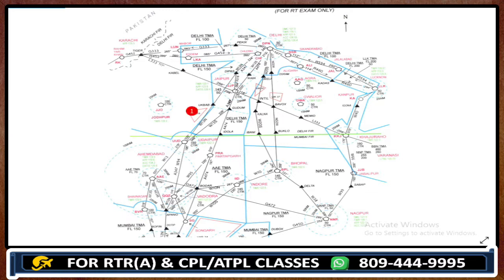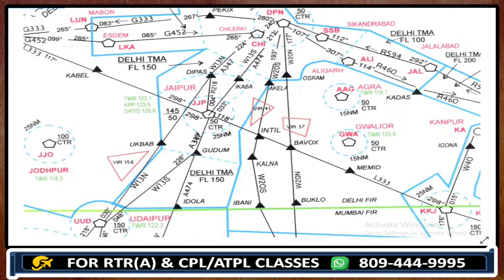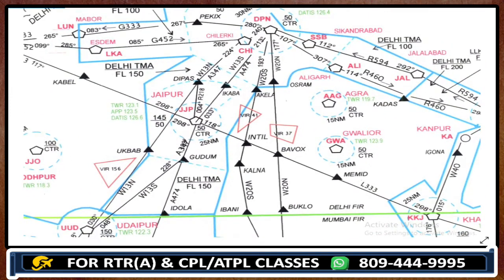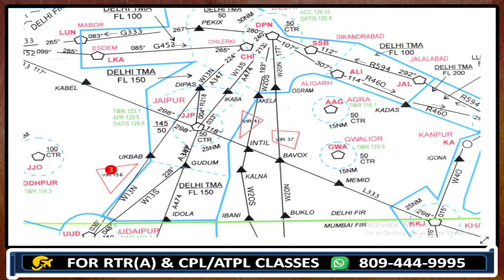As you can see on the screen, this is a restricted area, this is a restricted area, and this is also a restricted area. So guys, we have multiple restricted areas visible here on chart number one.